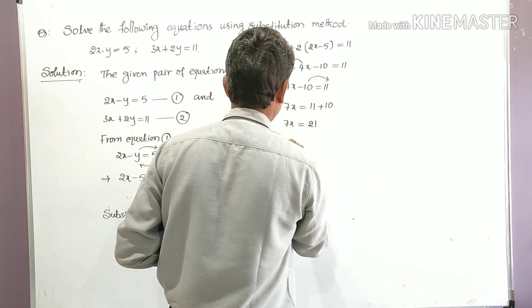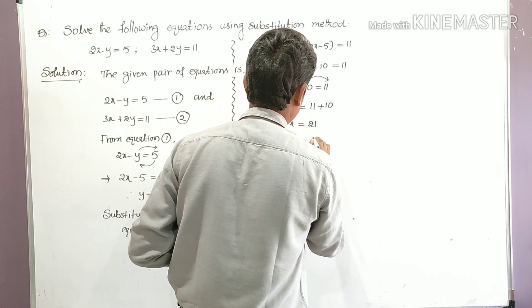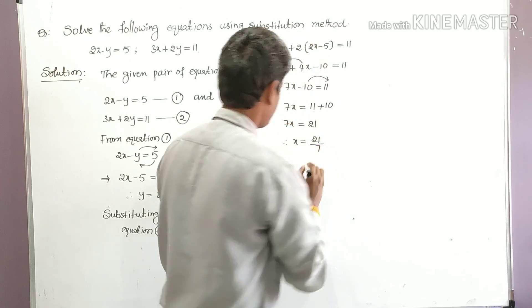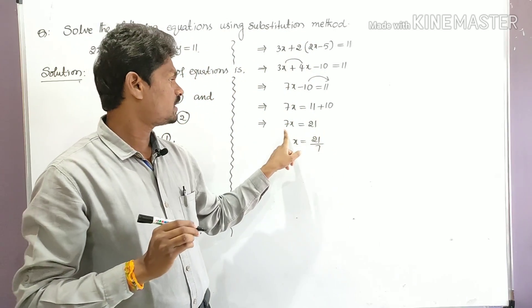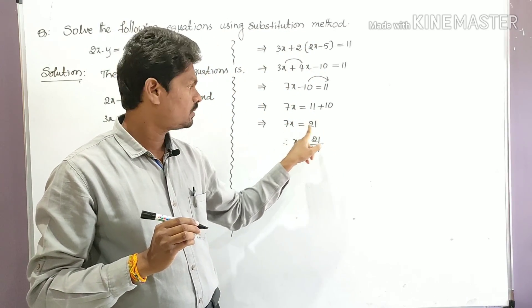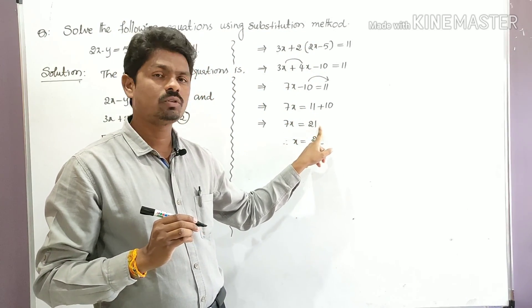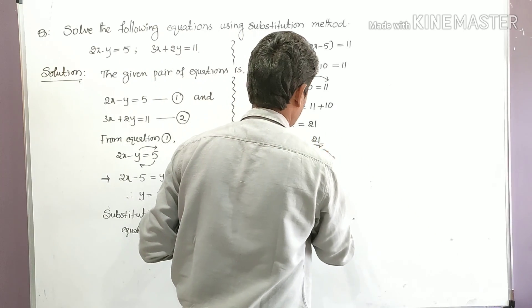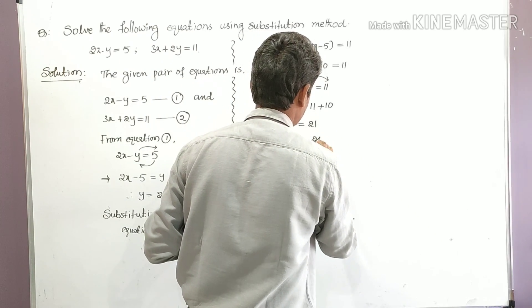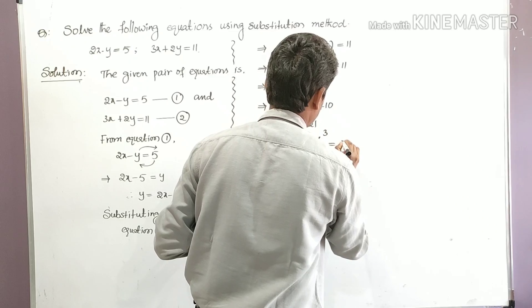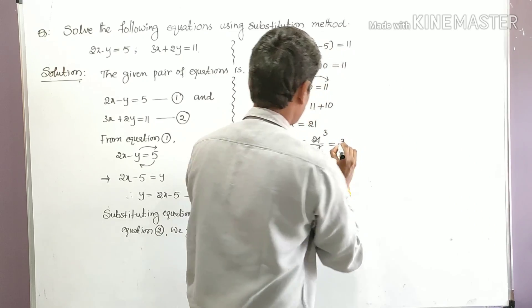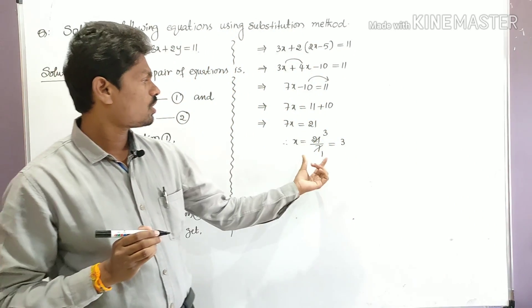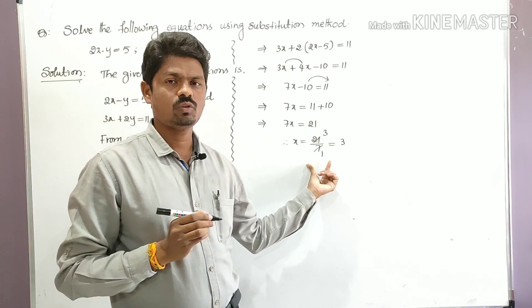Therefore, x is equal to 21 divided by 7. Take 7 to the right side — it was multiplying, so now it divides. Seven threes are 21, so x is equal to 3. We have now found the x value.